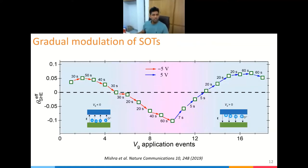We can modulate the spin Hall angle from a very positive value — for normal platinum — to various intermediate values by applying gate voltage for different durations, such as 30 or 40 seconds. Since the oxygen moves under the gate voltage and stays in place when voltage is removed, this effect is non-volatile. The spin Hall angle can be programmed by applying various gate voltages from positive, through zero, to very negative values of around −0.1, and then back to positive by reversing the gate voltage.